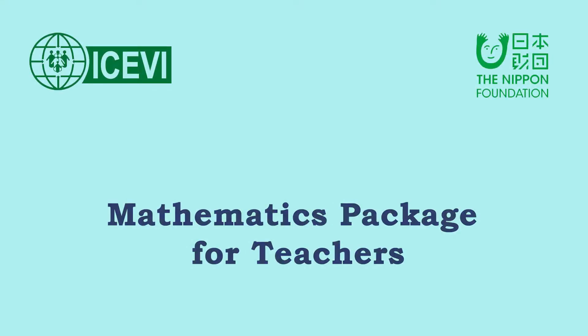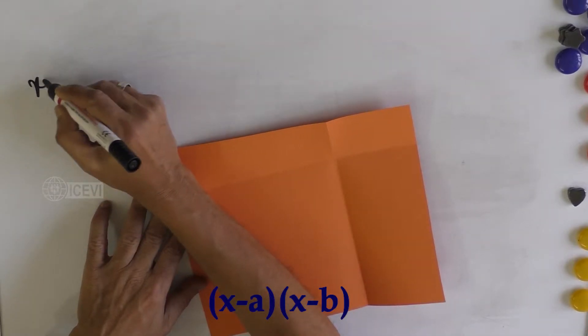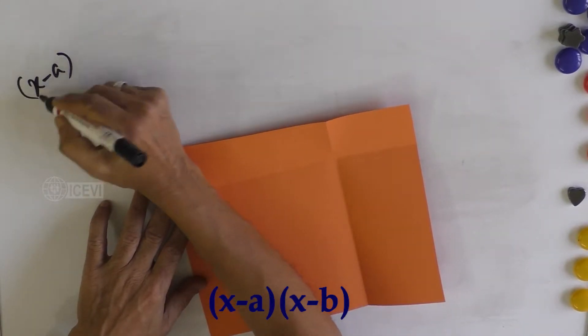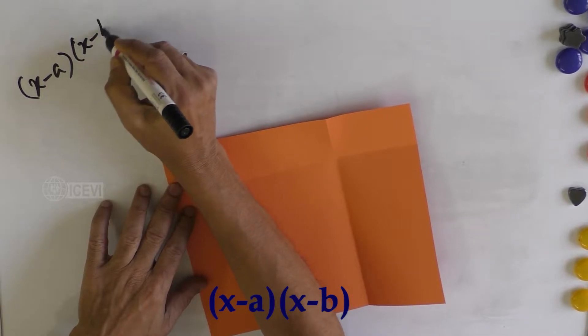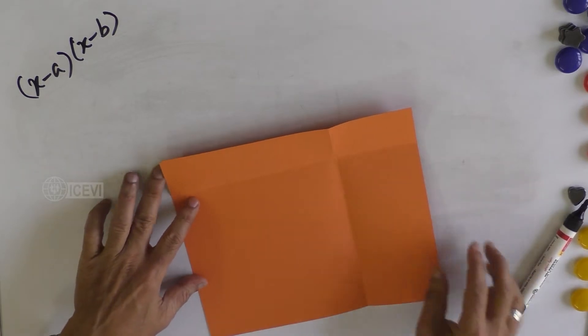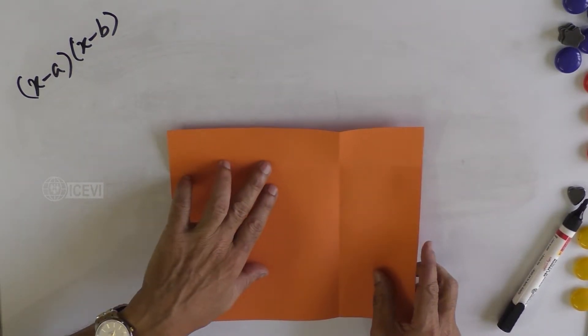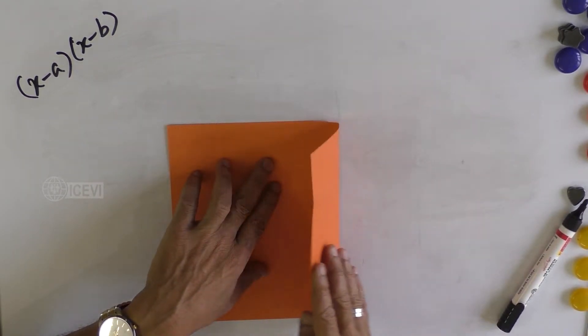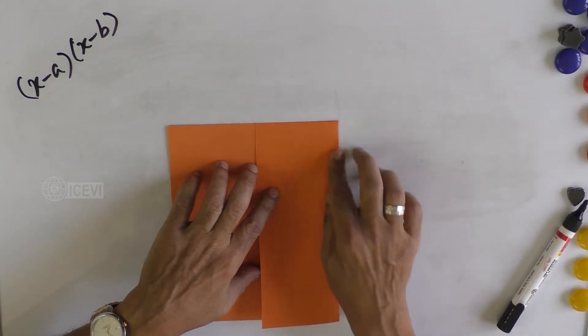The ICBI Nippon Foundation mathematics package for teachers. Title of the video: (x-a) multiplied by (x-b). Let us see how we can do this. Take a paper which is rectangular in shape and fold it.